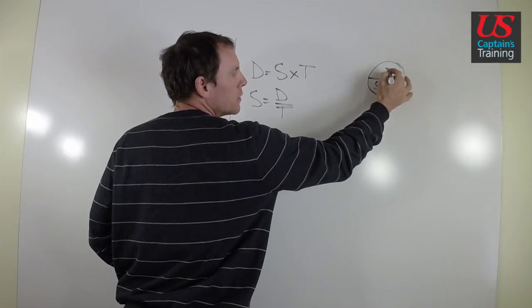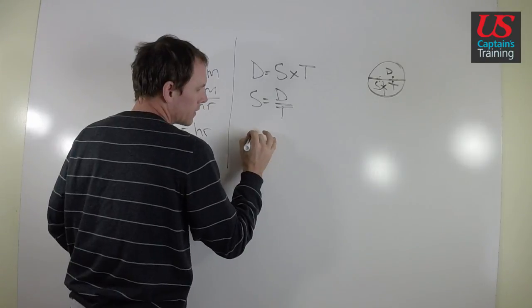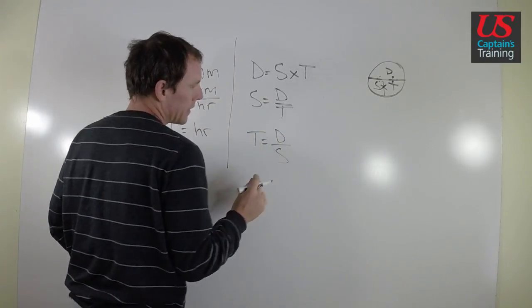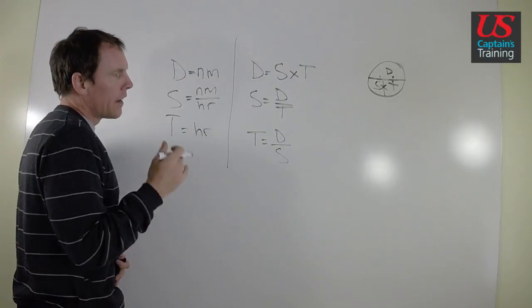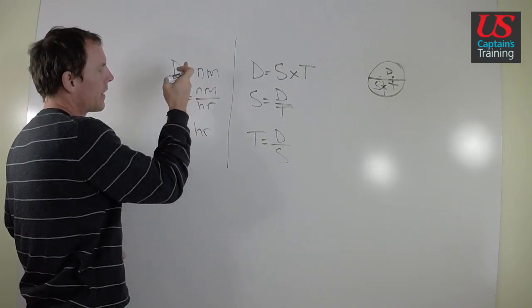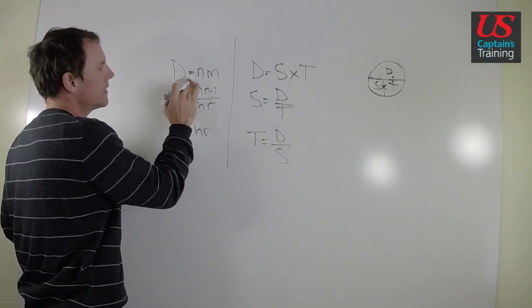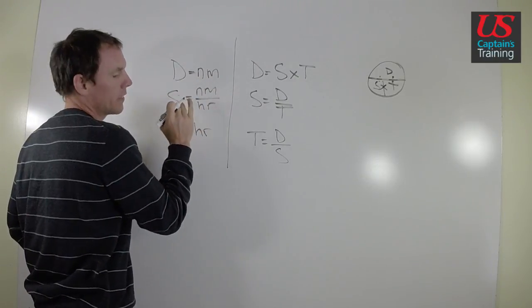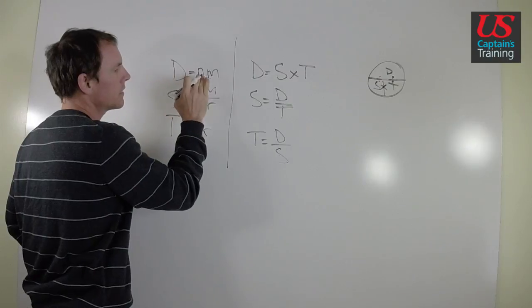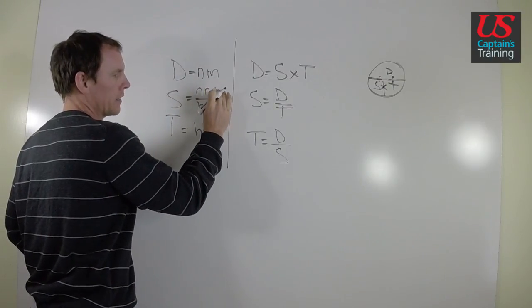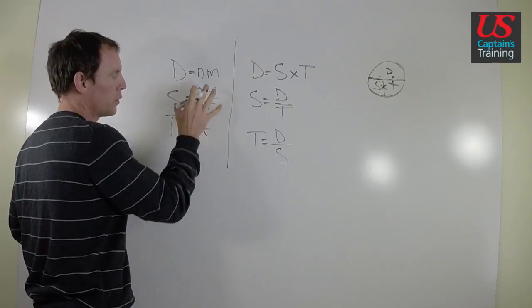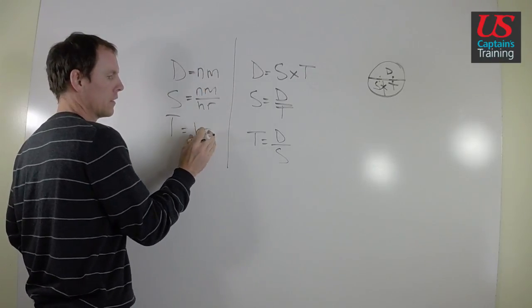Time is equal to distance divided by speed. So time is equal to distance divided by speed. And the units are important. Distance is nautical miles. Speed is nautical miles per hour and time is in hours. So in order to put these into this formula, that's the units.